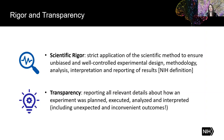To make sure everybody's on the same page, I provide definitions for rigor and transparency here. Scientific rigor is the strict application of the scientific method to ensure unbiased and well-controlled experimental design, methodology, analysis, interpretation, and reporting of results, according to the NIH definition. Transparency is reporting all relevant details about how an experiment was planned, executed, analyzed, and interpreted — and that includes unexpected and inconvenient outcomes.